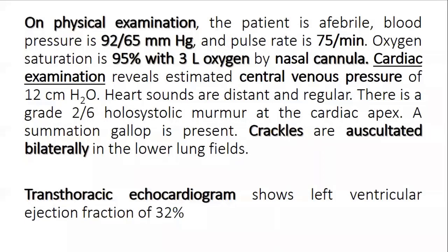On physical examination, the patient is in atrial fibrillation. Blood pressure is 92 over 65 mmHg. Heart rate is 75 per minute, oxygen saturation is 95% with 3-liter oxygen by nasal cannula. Cardiac examination reveals estimated jugular venous pressure of 12 cm of water.